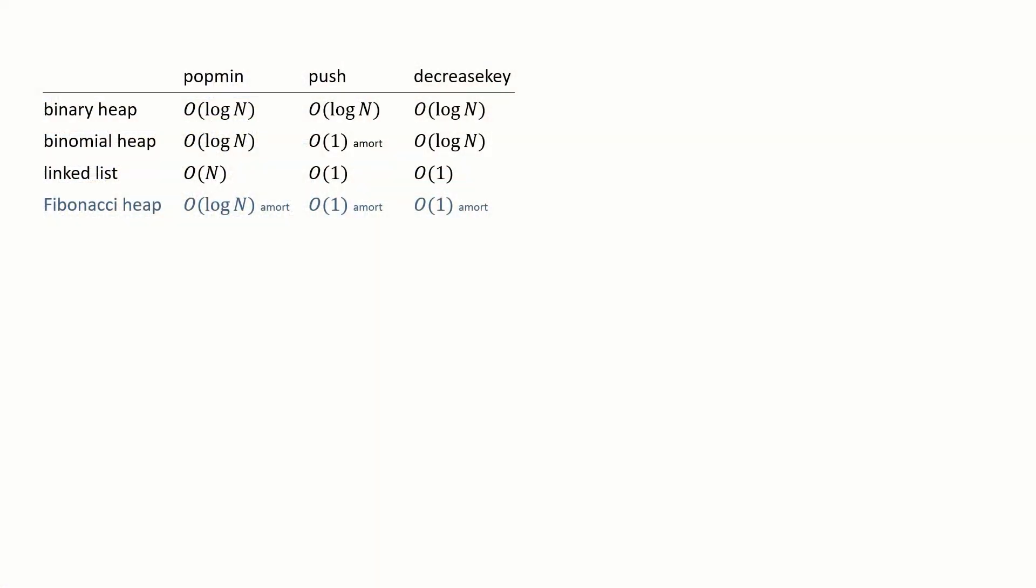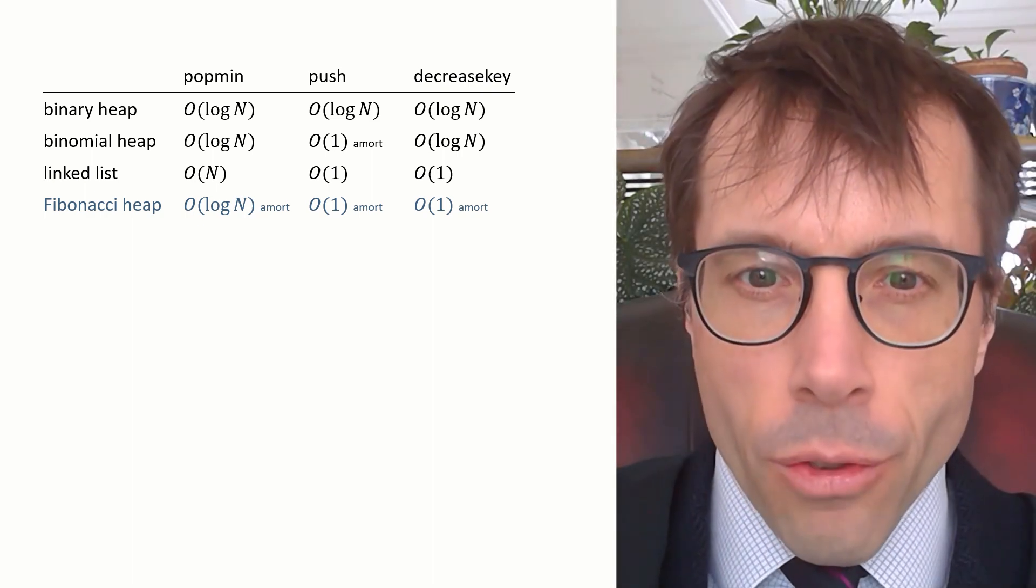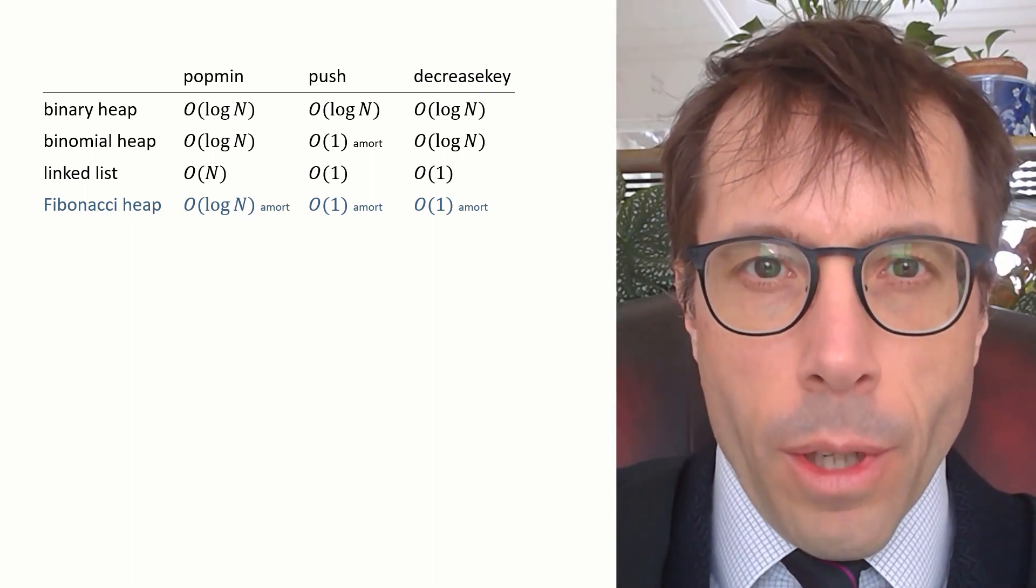The Fibonacci Heap is how to implement an exceedingly clever priority queue. To understand where it comes from, here's a reminder about the three different implementations of the priority queue that we saw in the last video, and the worst case running time complexity.